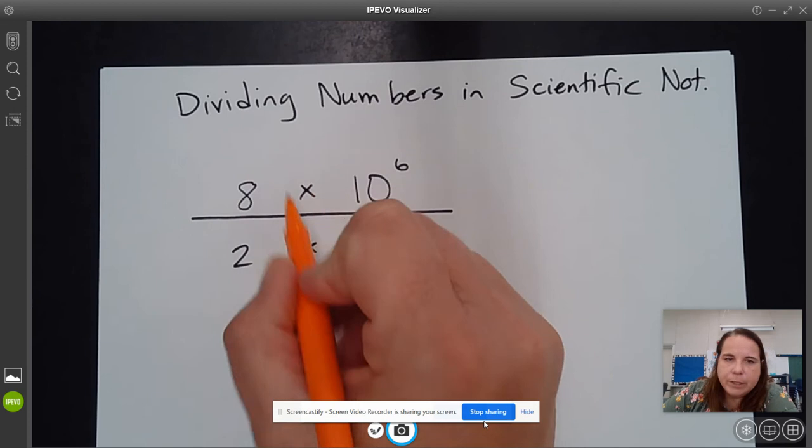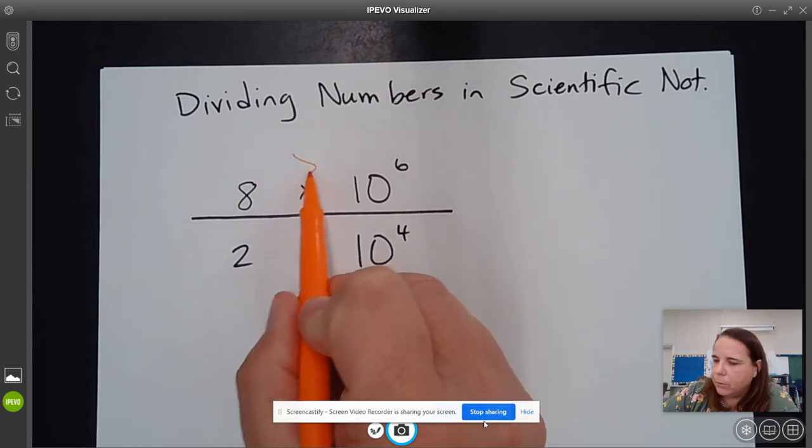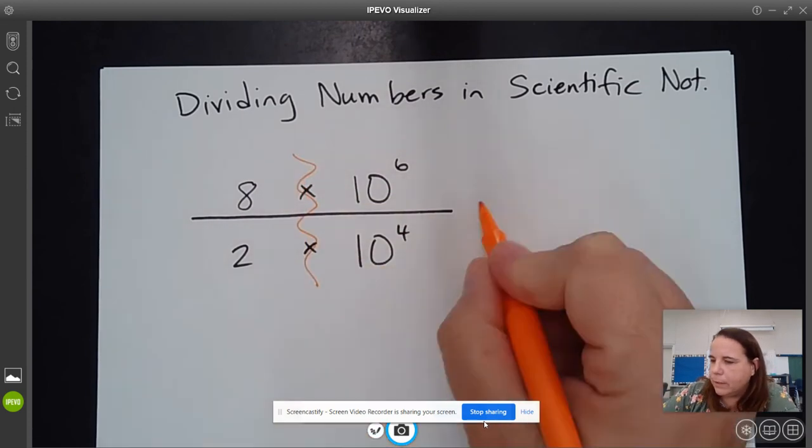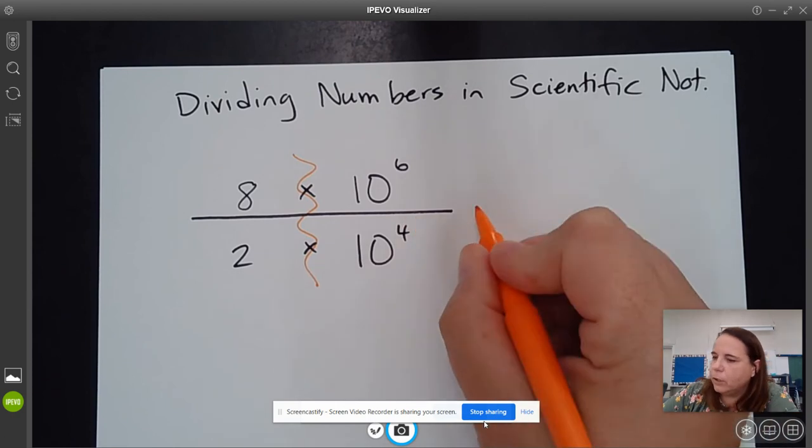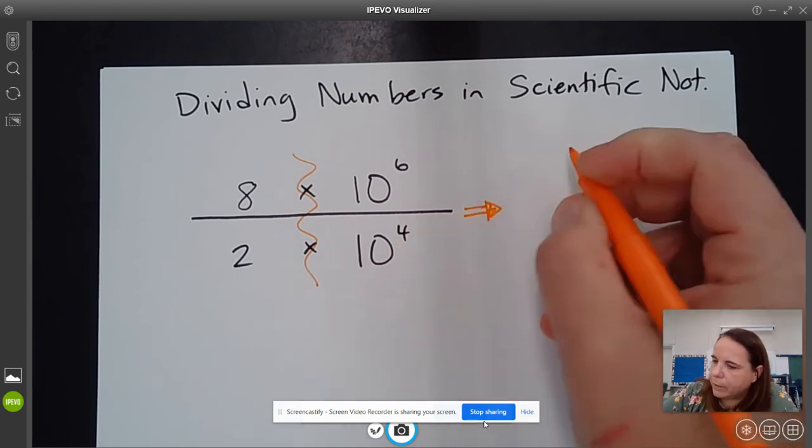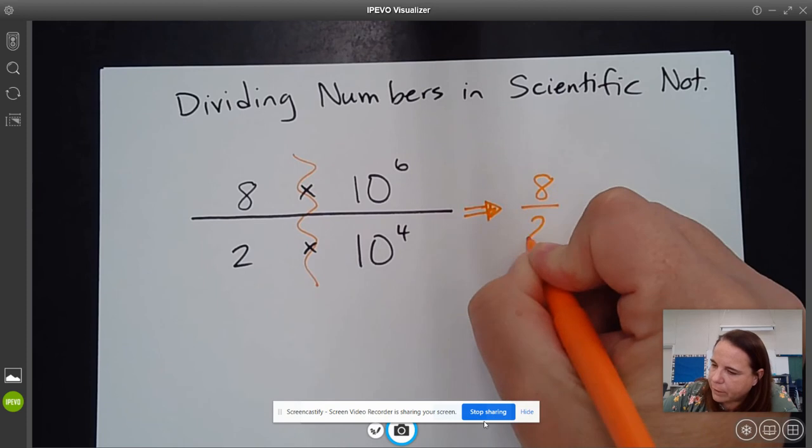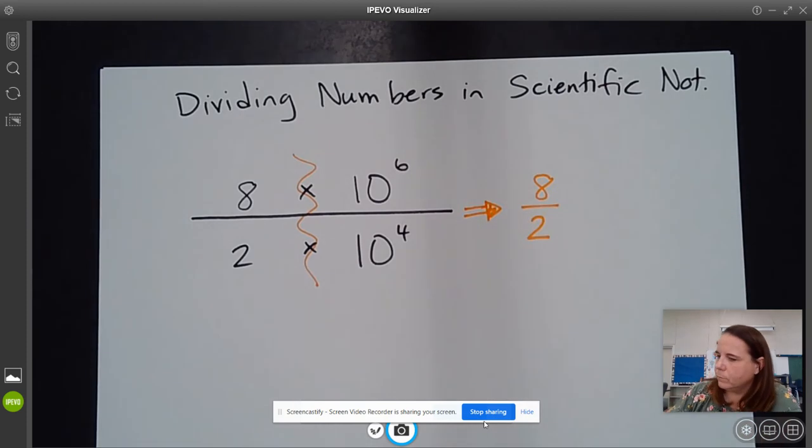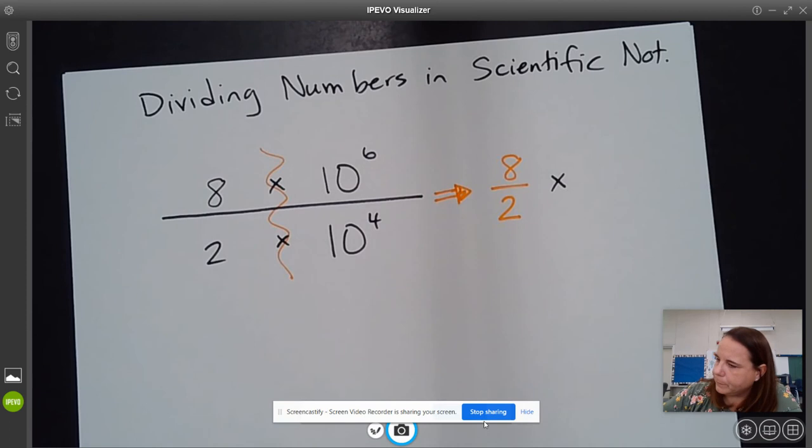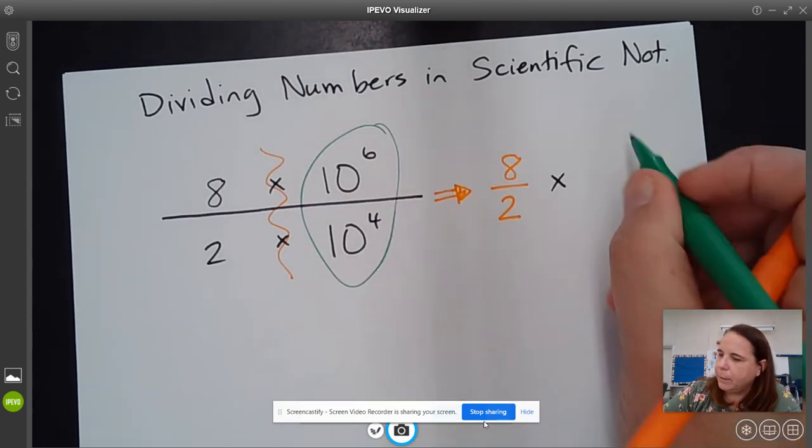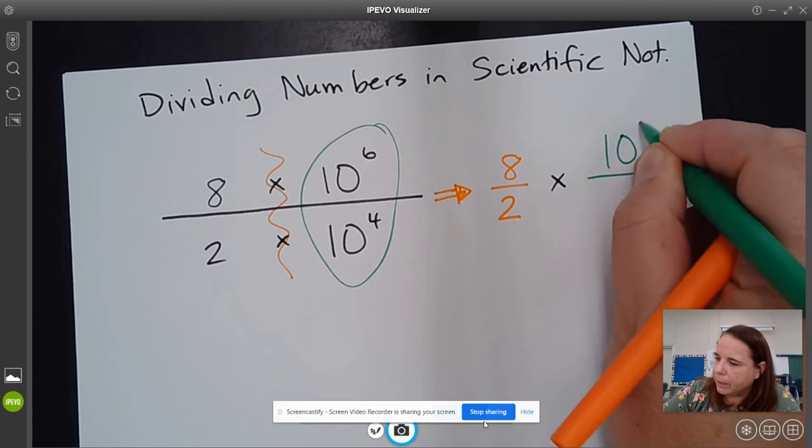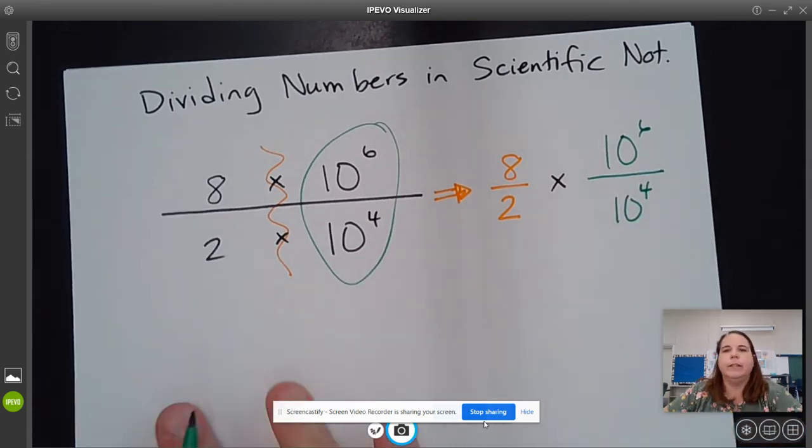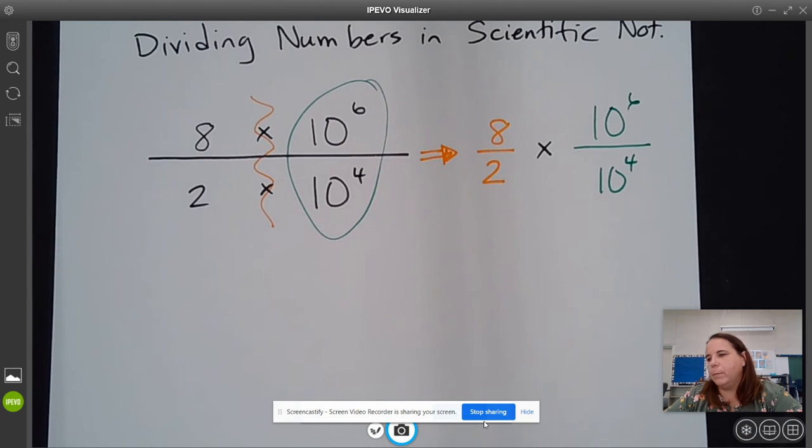But basically what we can do, just like we did before, is we can break these two pieces apart. So we can rewrite it so that we have 8 divided by 2 times, and then we can take our powers of ten and keep them separate. So we're going to have 10 to the sixth over 10 to the fourth. And then all we have to remember are our exponent rules for dividing and some regular division.